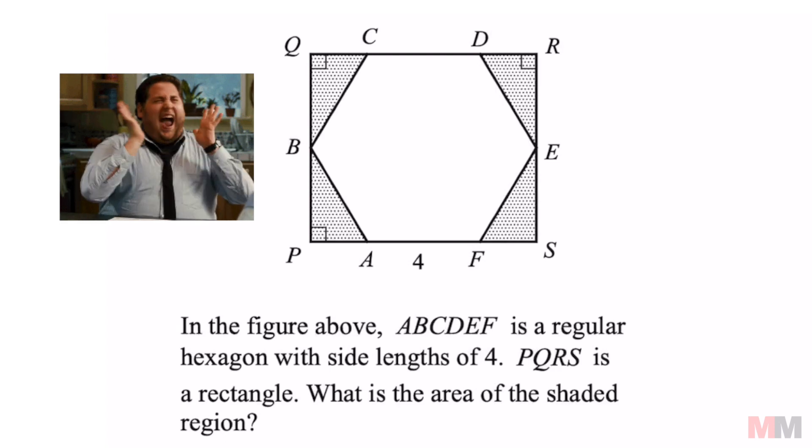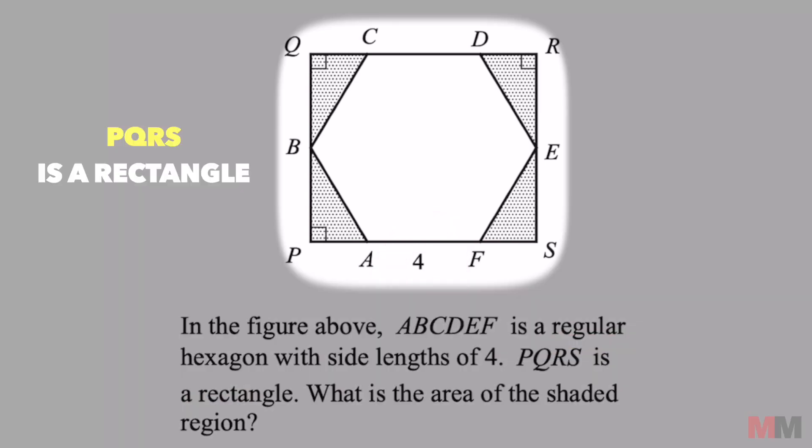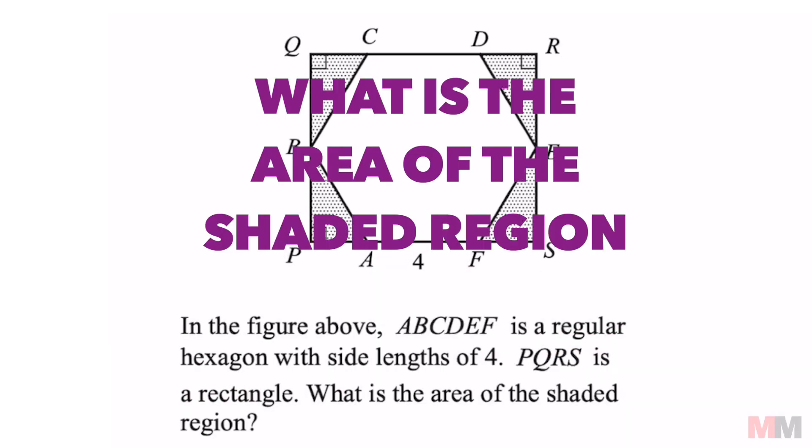This is another good question, guys. Check it out. We got the figure above. ABCDEF is going to be a regular hexagon with side lengths of four. PQRS is a rectangle. What is the area of that shaded region?